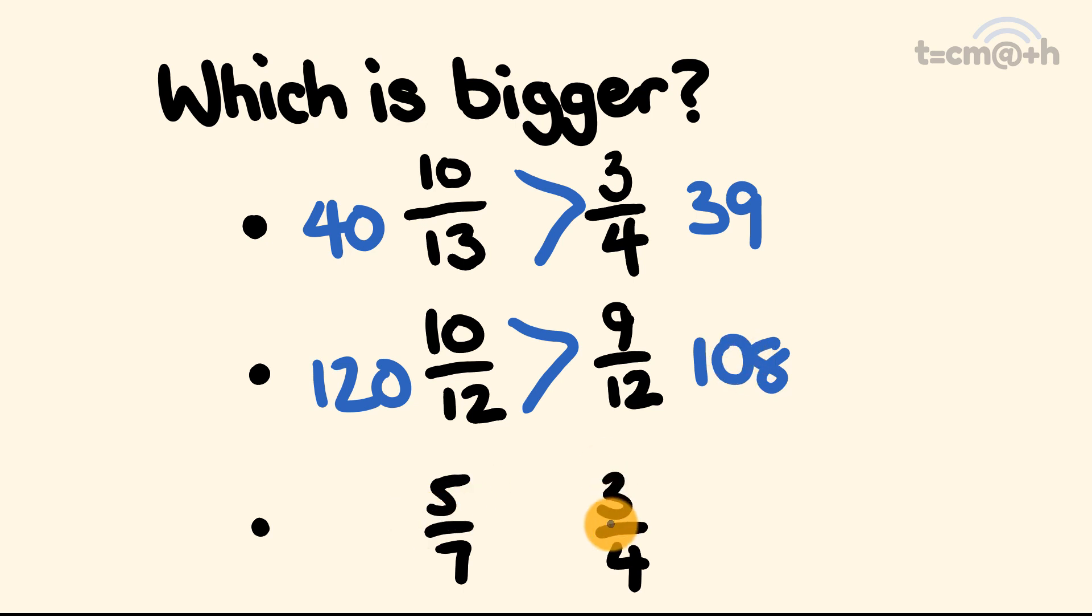Finally, we have 5 over 7 and 3 quarters. Which is the biggest out of these? Let's go through and do our cross multiplication. We have 5 times 4, which equals 20, and 7 times 3, which equals 21. That means that 3 quarters is bigger than 5 over 7.